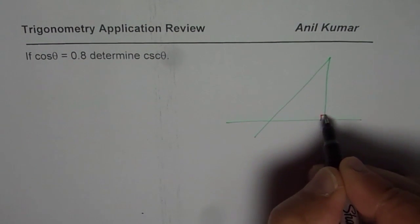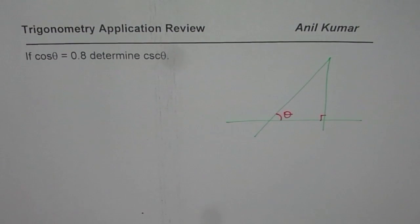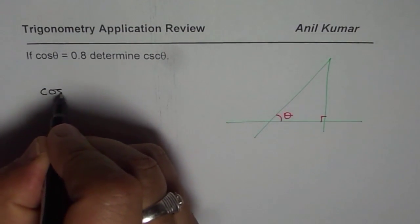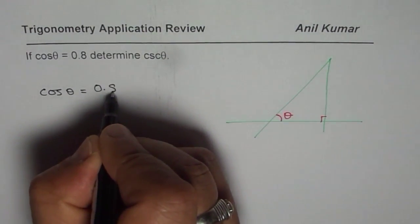So let us say this is a right triangle and we are given an angle θ here. Now the question is, we know cos θ is equal to 0.8.